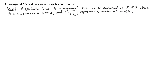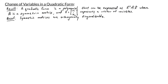In our previous video we learned that quadratic forms are polynomials with terms of degree exactly 2. These polynomials can be expressed in the form x transpose times A times x, where A is an n by n symmetric matrix and x is the vector of variables x1 through xn. We also learned that symmetric matrices are orthogonally diagonalizable.